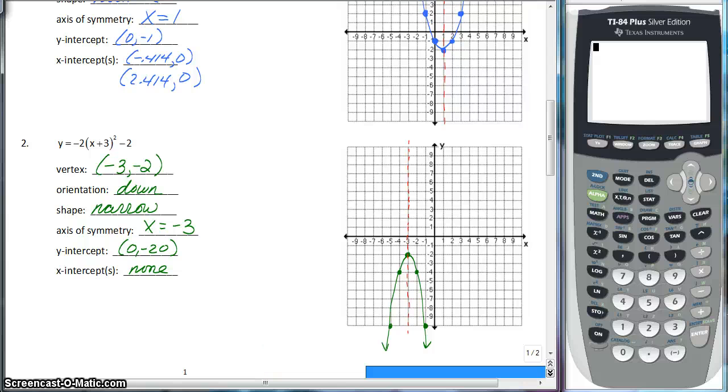So did you get the same thing? Well your y intercept is at 0, negative 20. All you have to do is use your calculator for that. Look at the table, find out what y is when x is 0. And the x intercepts, you should have found that there are none. And you could have thought about that right off the bat, once you placed your vertex at negative 3, negative 2, and it opens down. You see it is never even going to cross the x axis, so it has no x intercepts.